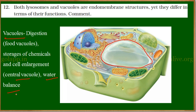In summary, lysosomes are called suicide bags. They help in digestion in lower organisms, kill foreign substances in higher organisms, and remove old and damaged cell organelles. Vacuoles in plants — the central vacuoles — help in maintaining water balance, water storage, cell enlargement, and they also store chemicals and enzymes required for the plant. In lower organisms like paramecium and amoeba, food vacuoles help in digestion and contractile vacuoles help in maintaining water level. Even though lysosomes and vacuoles are both part of the endomembrane structure, they differ in their functions.